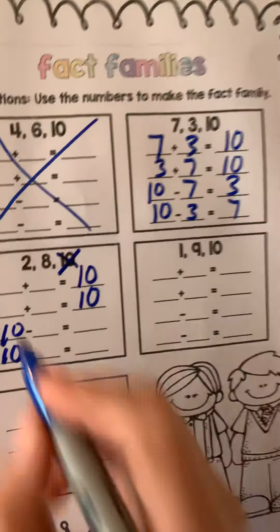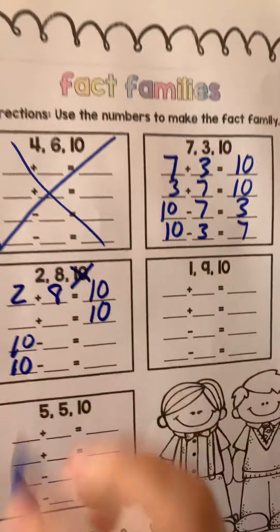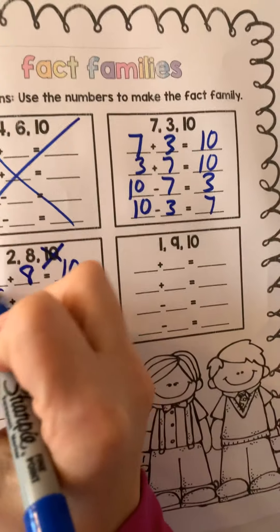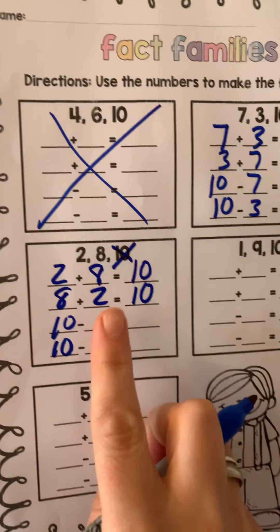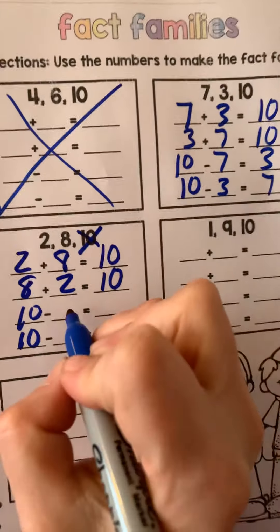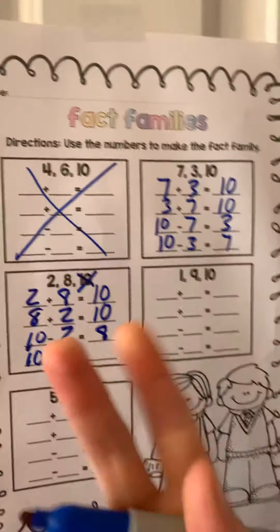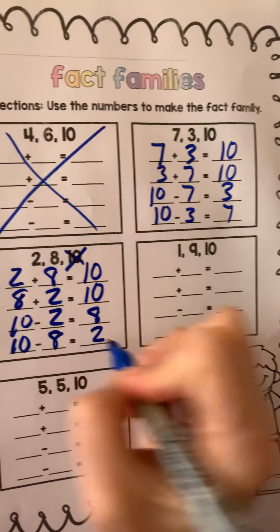And we have 2 and 8 left. Just plug it in. 2 plus 8 is 10. Flip it. 8 plus 2 is 10. Same thing. 10 minus 2 is 8. Flip it. 10 minus 8 is 2.